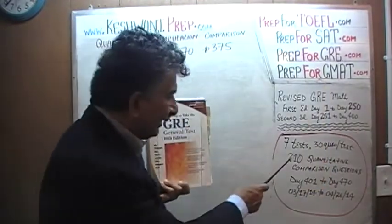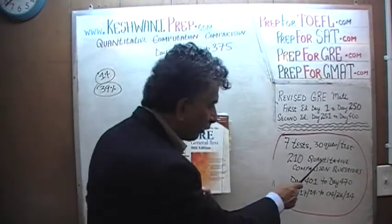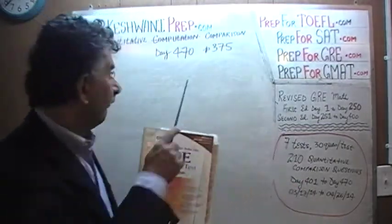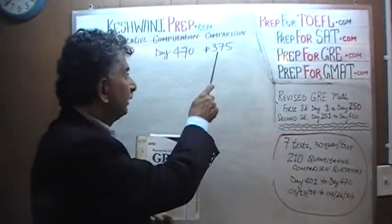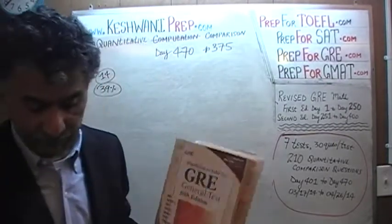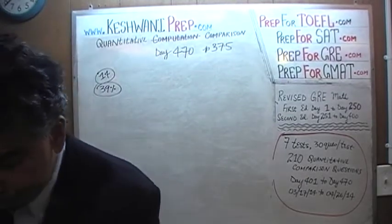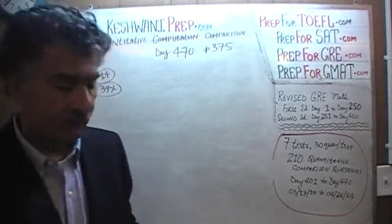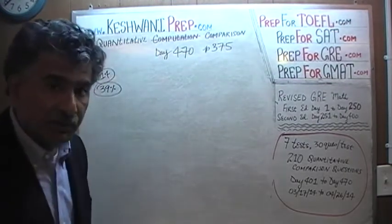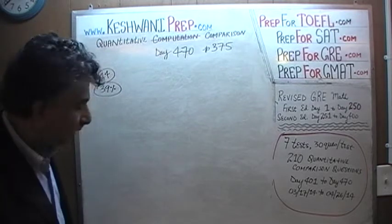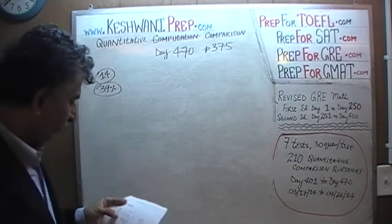This book contains 7 exams, each with 30 questions, for a total of 210 quantitative comparison questions. Today is our very last day in the series, day number 470, and we are on page number 375. Please turn to it. Problem number 14 — the penultimate problem of the exam and of our series on the very last day. When it appeared in the real exam, only about 39% of the people had luck with it — about three-fifths of the people missed it.